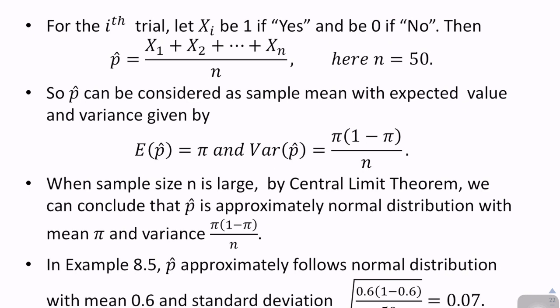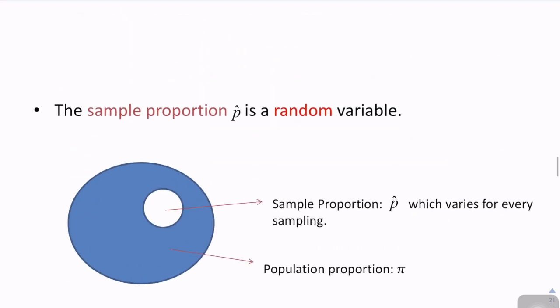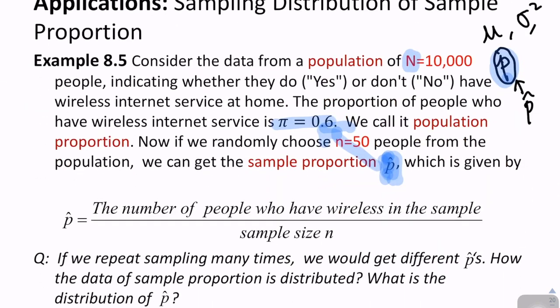So for example, we have done M such experiments. For the i-th trial, so i is a number, like between 1 to M, let X_i be 1 if yes, and be 0 if no. So you will have X_1 plus X_2 plus X_3 until X_n divided by n. Here n is the sample size, which is 50.